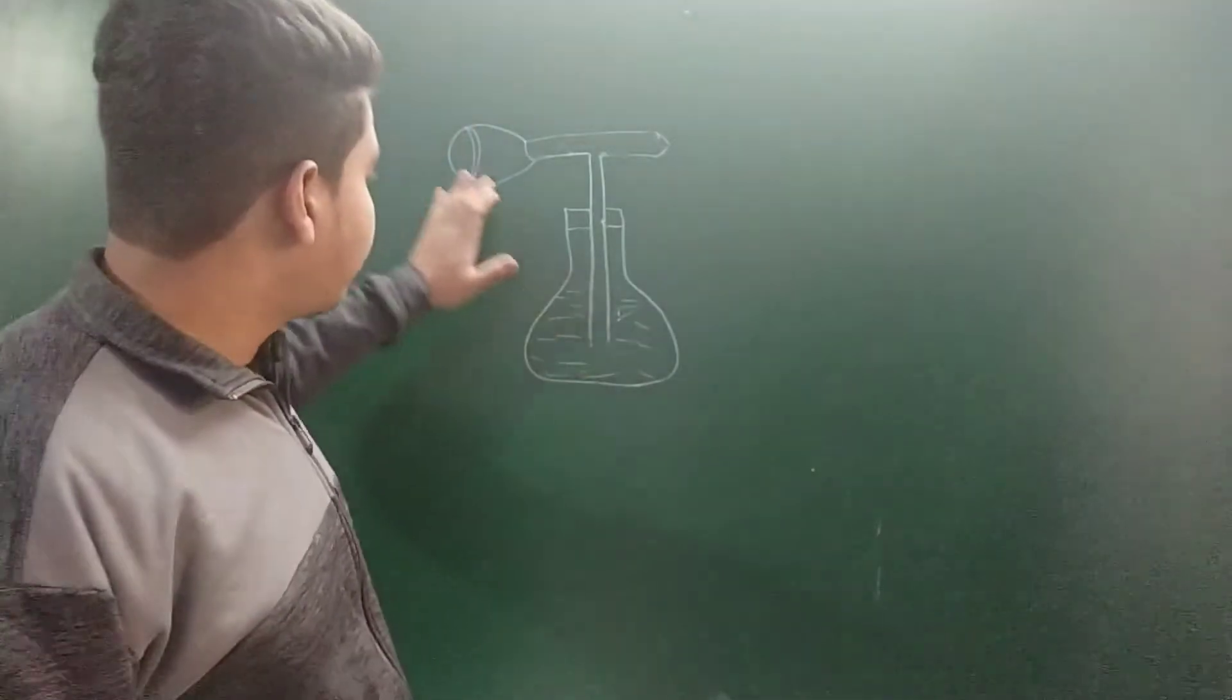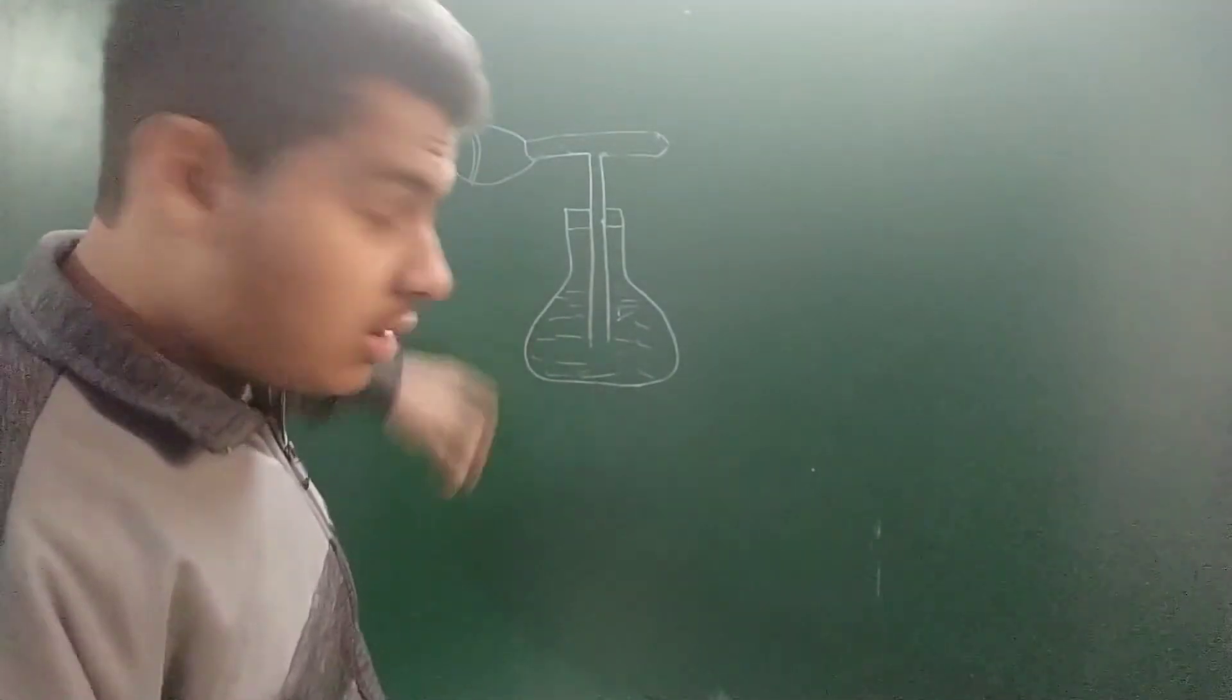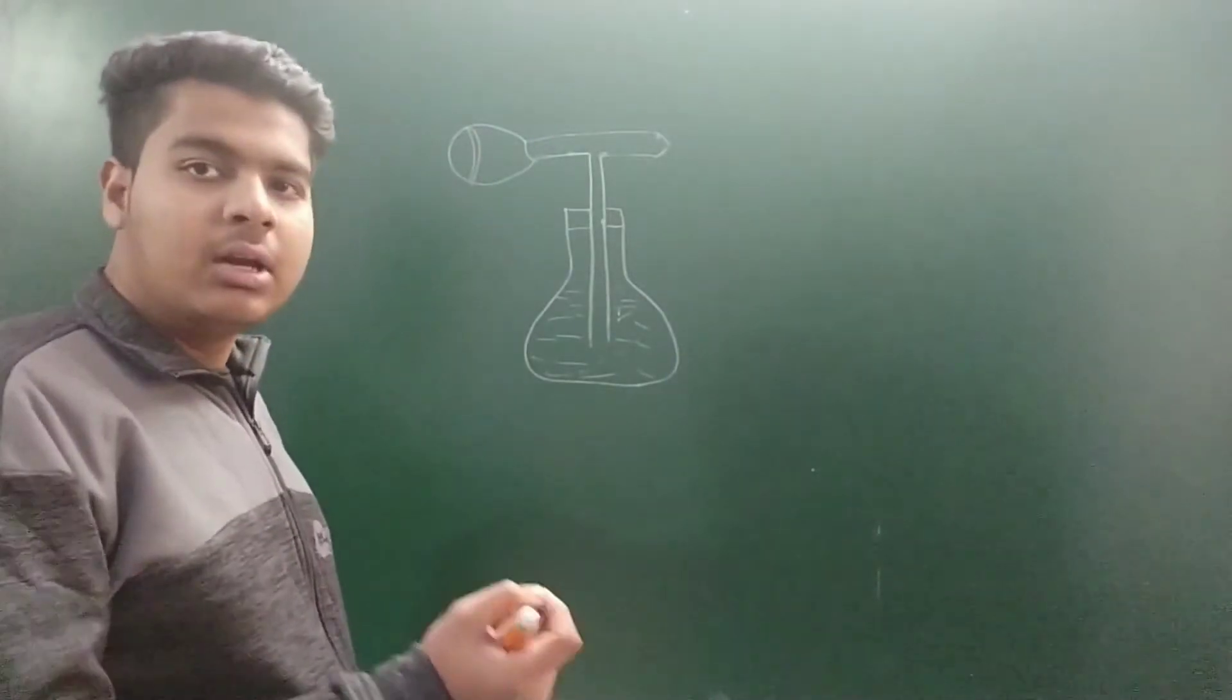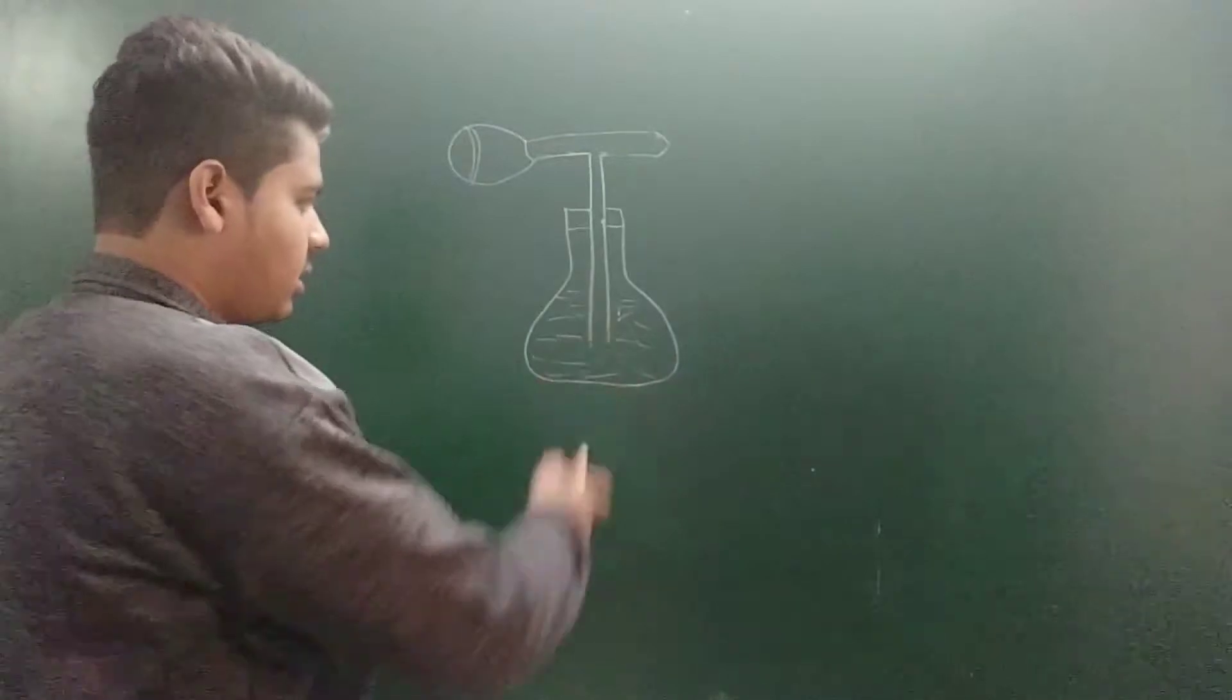As you can see, the image of an atomizer has been drawn. In normal language we call it a spray, so here we'll consider it as a spray. Now let us discuss its working. In this you can see our container is there - let me mark it first. This is a container.